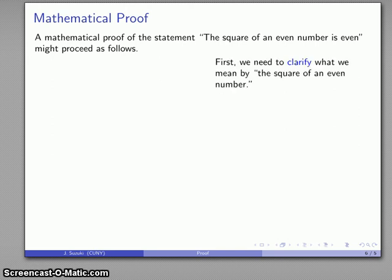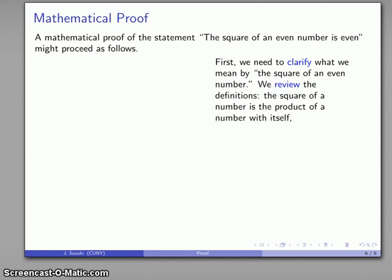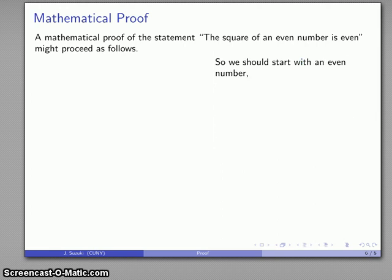Well how might I go about this? Well in order to find a proof for this statement I have to do these two things. First of all I have to figure out what I mean by the square of an even number. And so I review my definitions. The square of a number is the product of a number with itself. And I also remember things like a number is even if it's two times some other number. And so this gives me a good starting point here. I'm going to start with an even number. Well that's a number that's two times something else. And then I'm going to find the square of that number. And I can use a little bit of algebra here. N squared equals 4k squared.